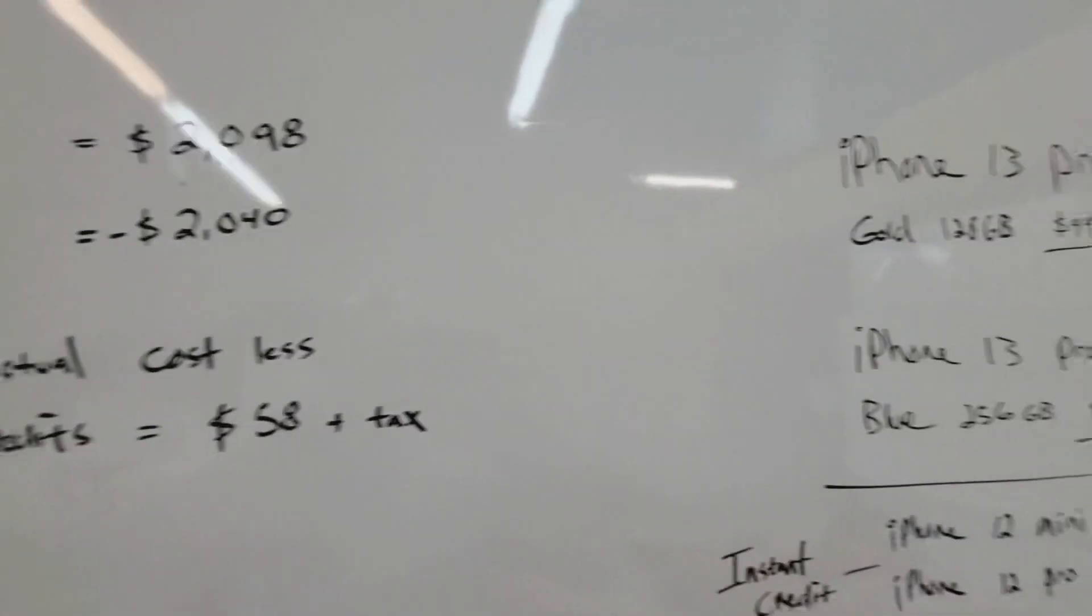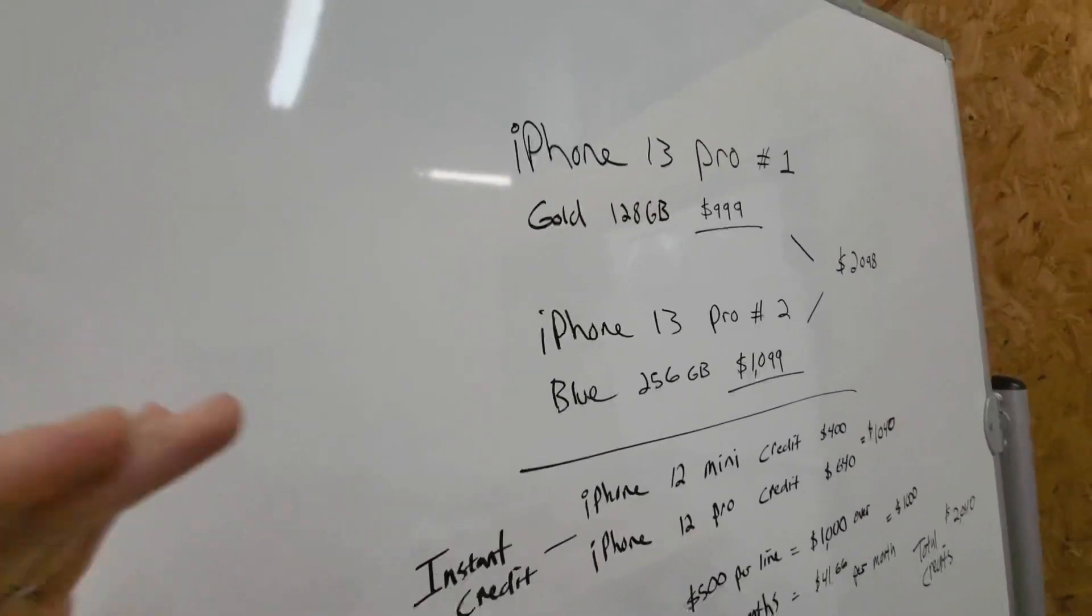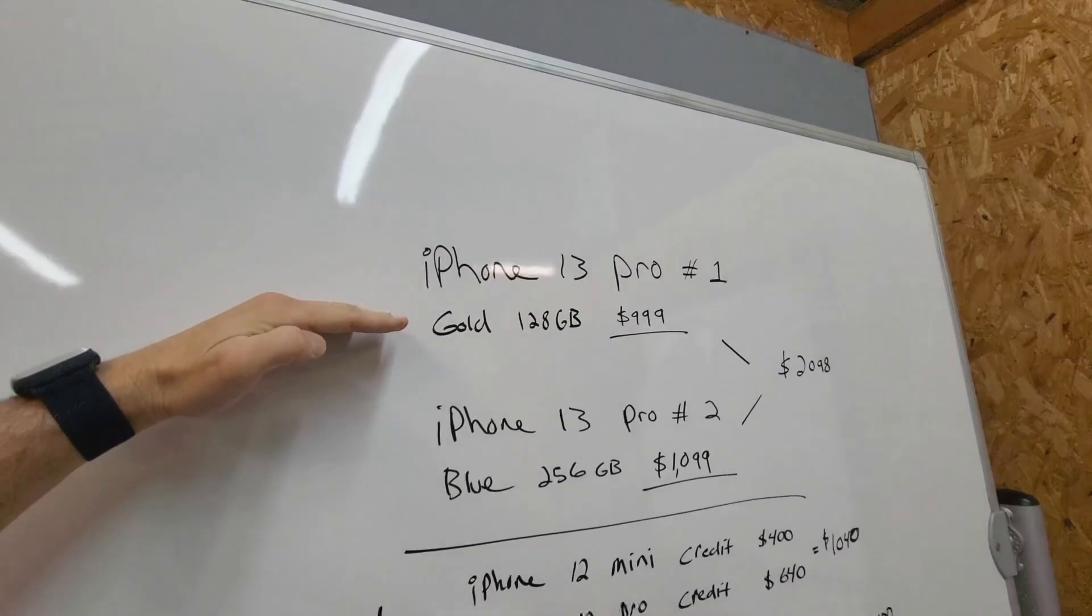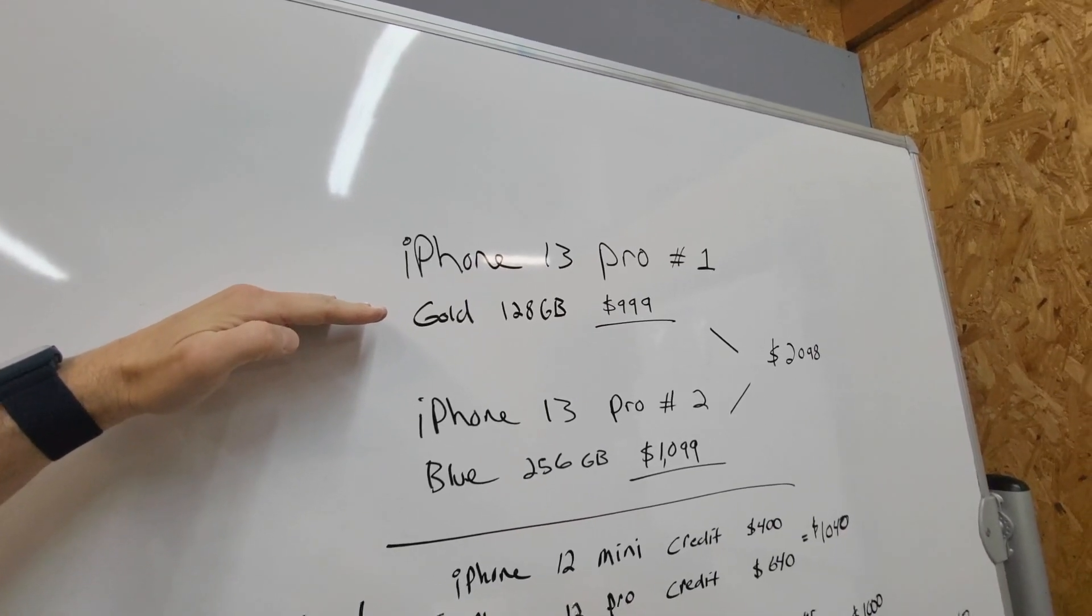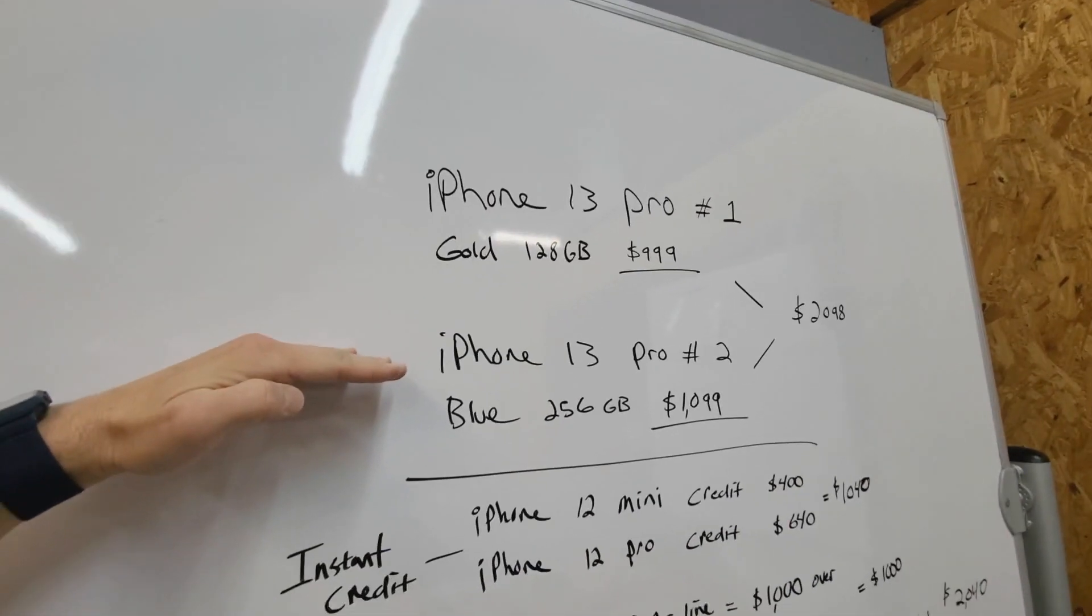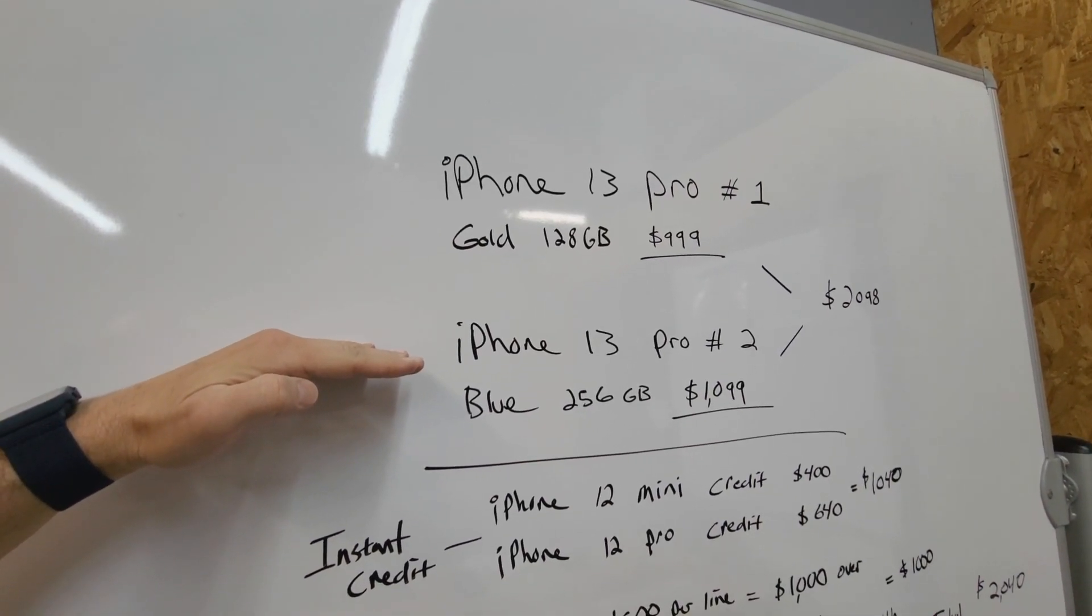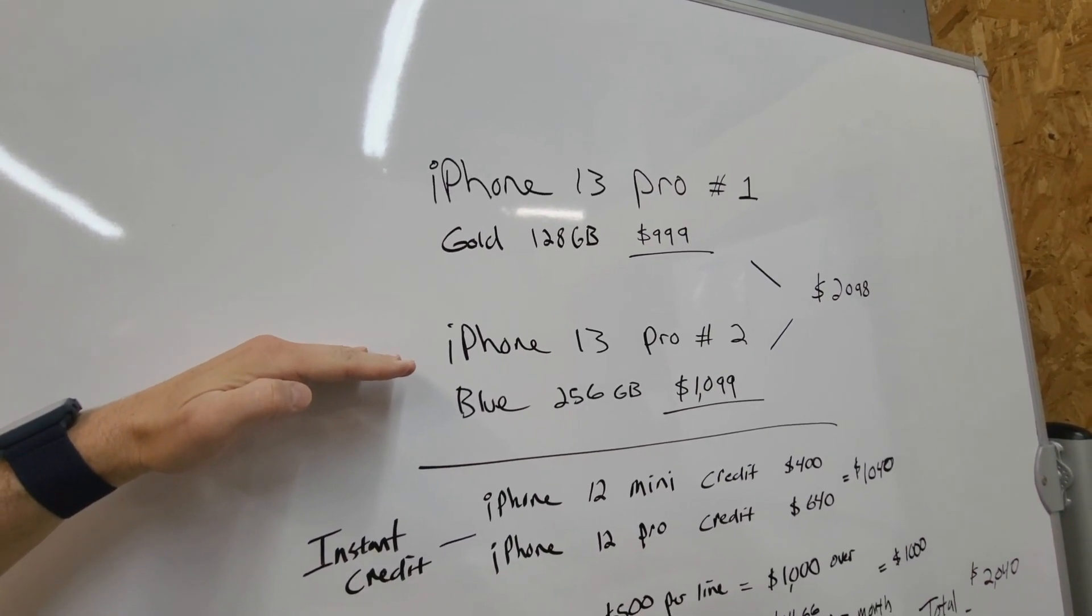Okay, let me show you where we're at here. So her phone in gold, the iPhone 13 Pro 128 gigs, is going to cost $999. The one I want is the iPhone 13 Pro in blue, 256 gigabytes. It's $1,099. So together you're looking at $2,098.